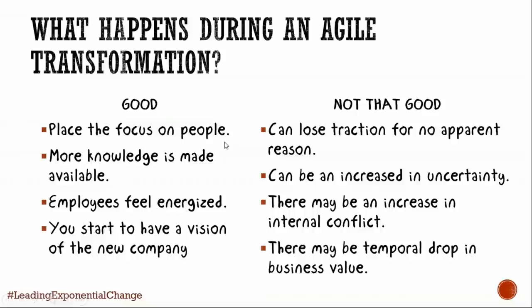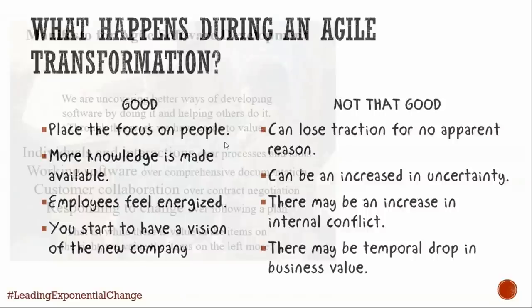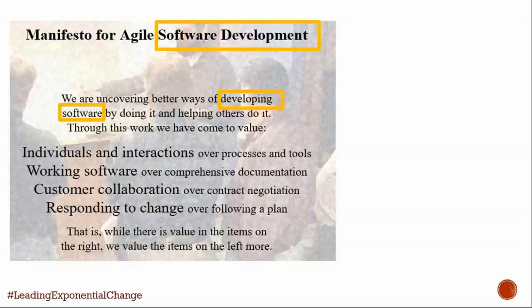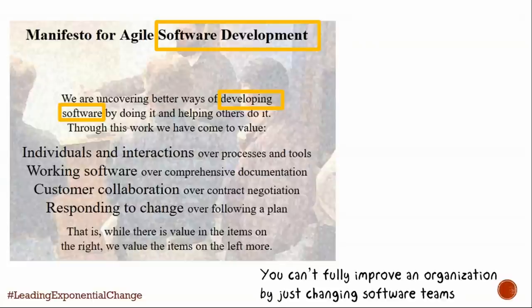If we look at the manifesto for agile software development, some people forget that Agile was created for software development. If you look at the manifesto, it focuses on developing software. I'm not saying you can't apply Agile to the rest of the organization, but you have to be very careful — some of the ideas, especially the Agile principles, are very difficult to apply in the rest of the company. This mindset is very good for software, but there are certain things people in a software team get used to that are not the same in the rest of the company.